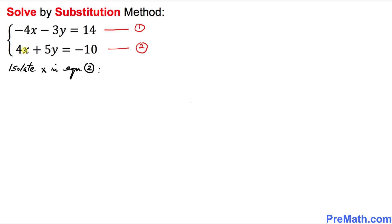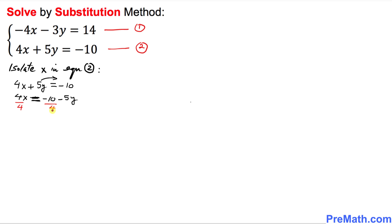So let's write down equation two: 4x plus 5y equals negative 10. We are going to move 5y to the other side, giving us 4x equals negative 10 minus 5y. Now since we want to isolate x, we are going to divide by 4 across the board.